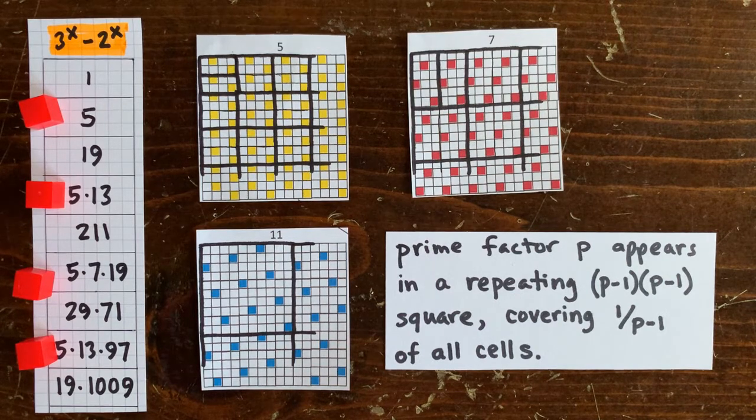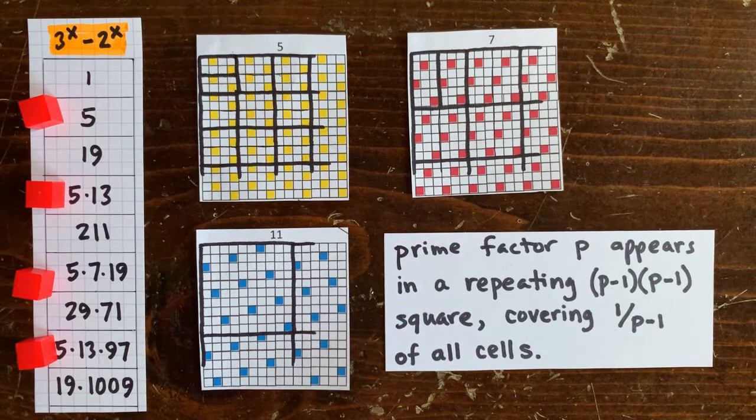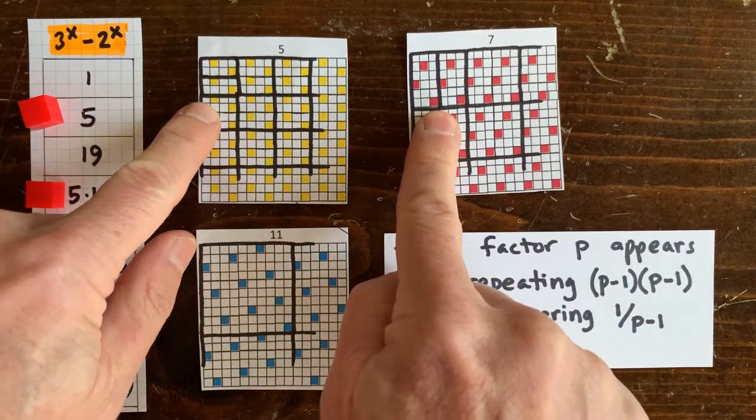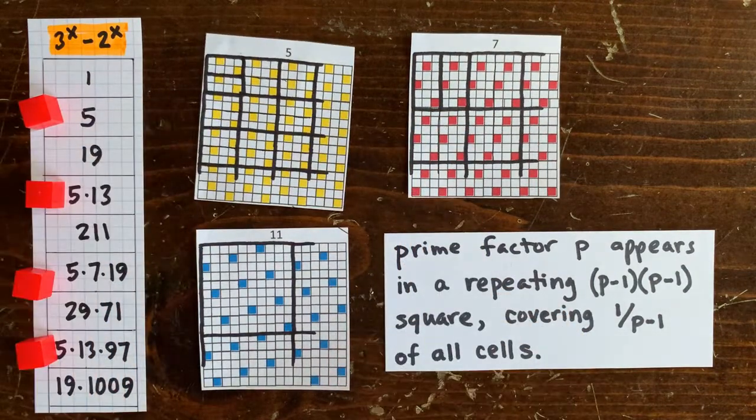Overall, the factor appears in 1 out of every p minus 1 cells. And notice that inside 5 and 7, the black box breaks down into even smaller shaped repeated tiles.